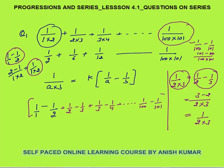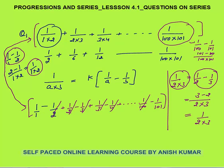The given series and the rewritten series are the same — just a different way of writing. Now it becomes helpful: 1/2 cancels with the next +1/2, then 1/3 cancels, then 1/4, and so on up to 1/100. We are only left with 1 − 1/101. Taking LCM as 101, this gives (101−1)/101 = 100/101 as the final answer.